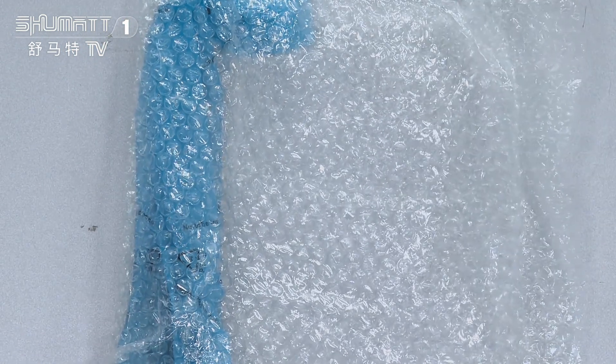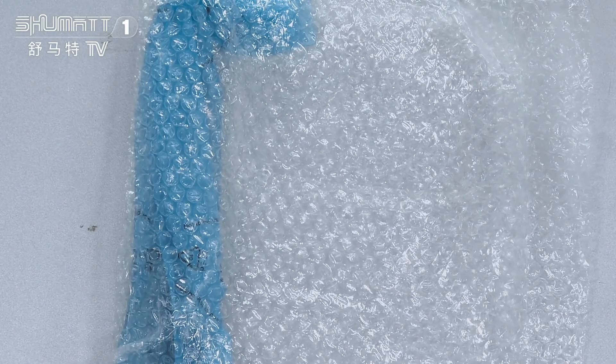Inside, we have two layers. First layer to avoid damages during transportation, and the second layer is the blue VCI anti-rust bag.